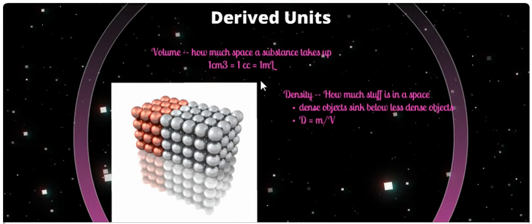Meters cubed relates to milliliters by the centimeter cubed, or the cc. If you have one centimeter cubed, we also sometimes call this one cc. And if you're ever in the pre-medical field, you need to know that one cc is the same thing as one milliliter. And that's how much space there is, how much space the substance takes up is its volume.